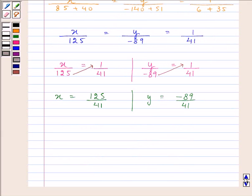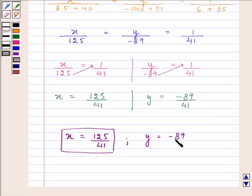Now, as we can see that they are already in the lowest form, so therefore, X equals 125 by 41 and Y equals minus 89 divided by 41 is the solution of the given equations.